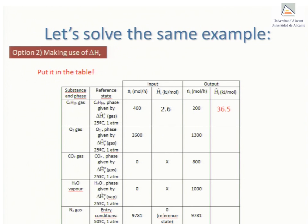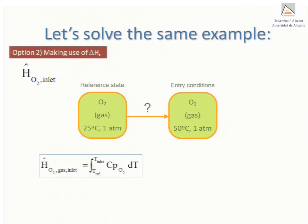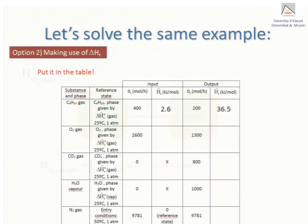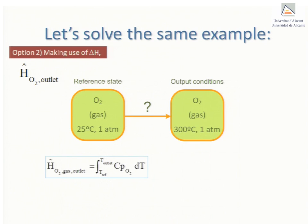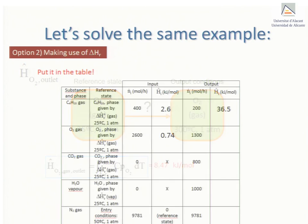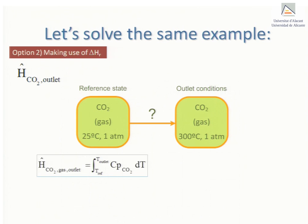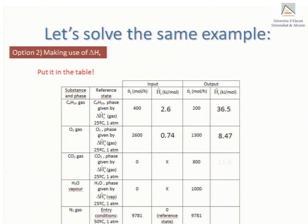When it comes to the oxygen in the inlet the molar enthalpy we obtain is 0.74 kJ per mole. As for the oxygen in the outlet the molar enthalpy obtained is 8.47 kJ per mole. For the carbon dioxide in the outlet we obtain 11.6 kJ per mole. Remember we already know we don't have to bother to calculate this for the carbon dioxide in the inlet.